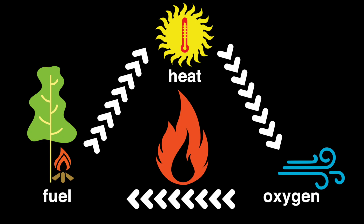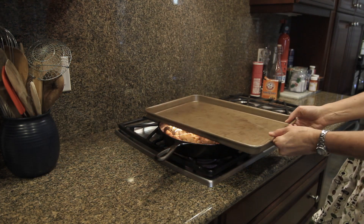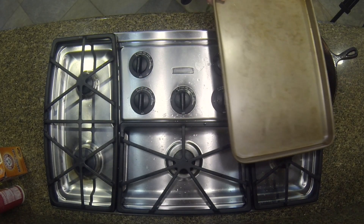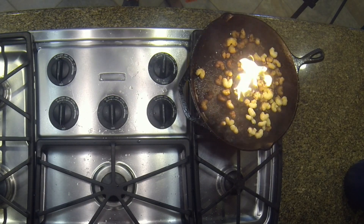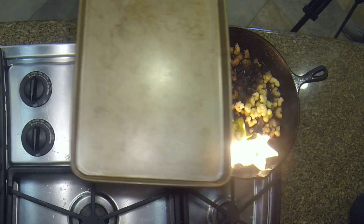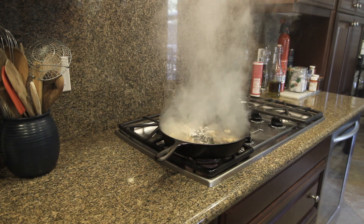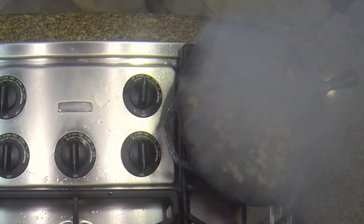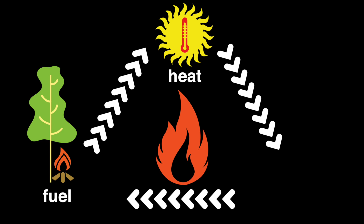Let's go back to our fire triangle. Heat isn't the only element we can remove. Watch what happens when we slowly move a lid over the burning material in the pan. The same thing happens when we carefully pour baking soda over it. That's because the lid and the baking soda accomplish the same thing — they both smother the fire, or to put it another way, they remove the oxygen.